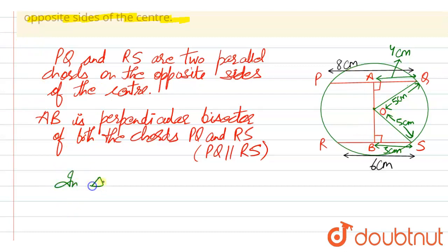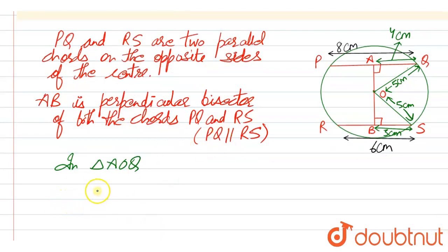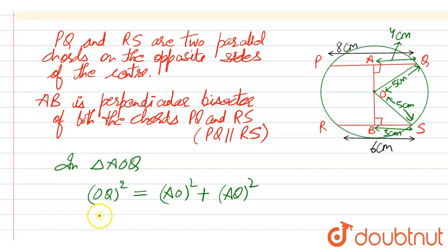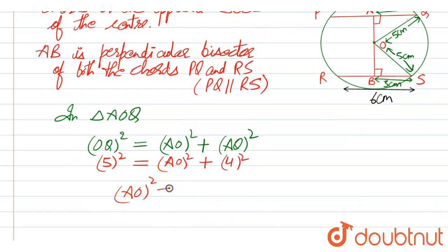From this result we can say that triangle AOQ is a right-angle triangle, so we can apply Pythagoras here. OQ² = AO² + AQ². Putting in values: 5² = AO² + 4². So AO² = 25 − 16 = 9, therefore AO = 3 centimeters.